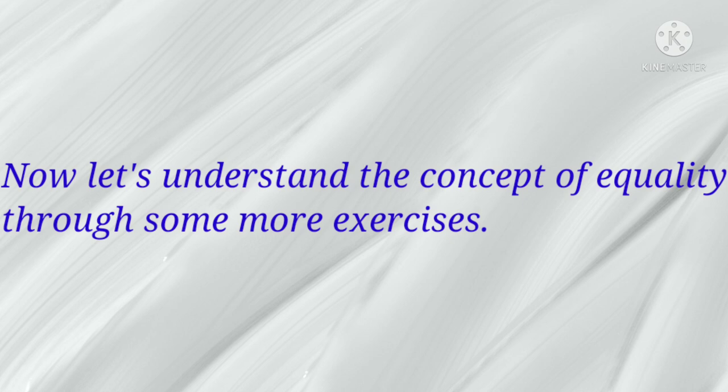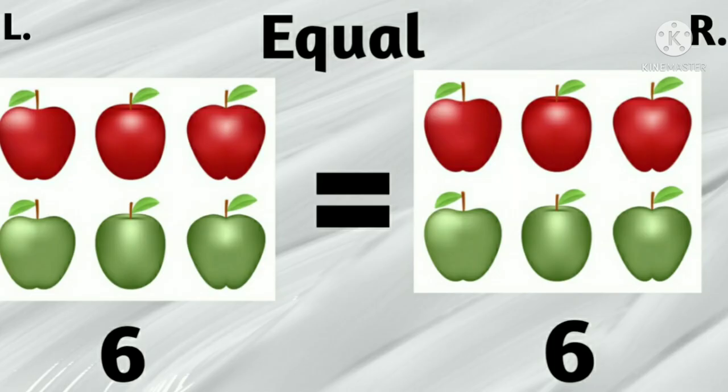Now let's understand the concept of equality through some more exercises. In this one, the left side has 6 apples and the right side also has 6 apples. So we can say both sides have equal number of apples.